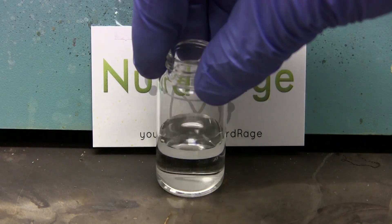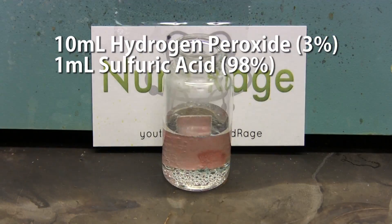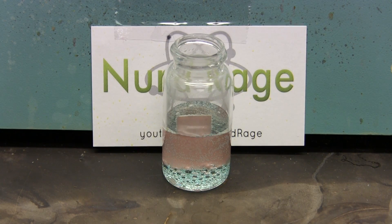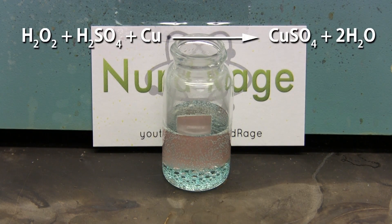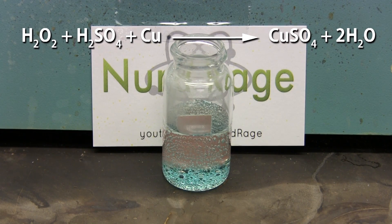The second peroxide family etchant is hydrogen peroxide and sulfuric acid. This also etches rather quickly and produces less fumes than the hydrochloric acid version. What's happening is the hydrogen peroxide is oxidizing the copper and reacting with sulfuric acid to produce copper sulfate.